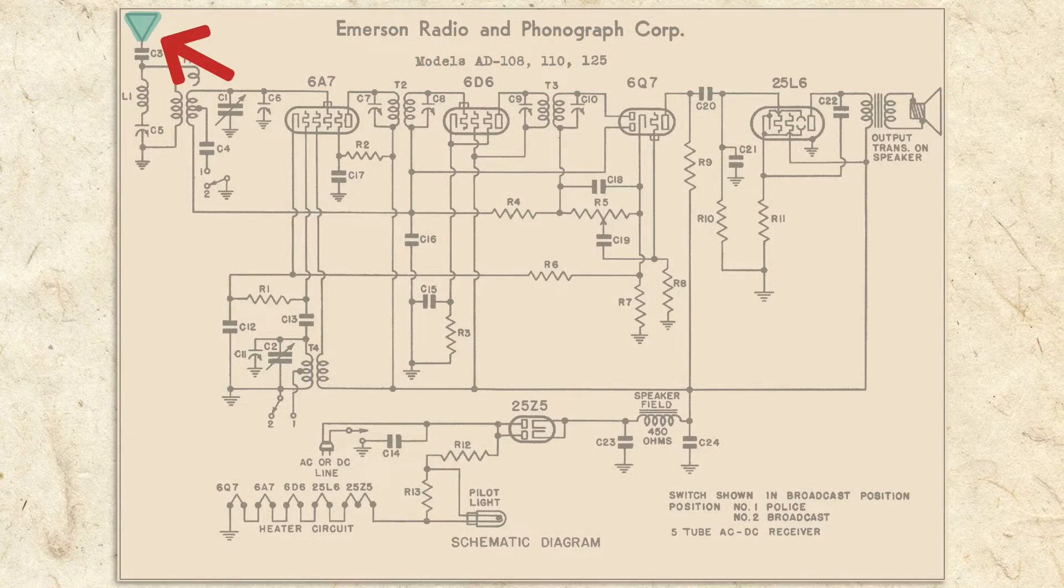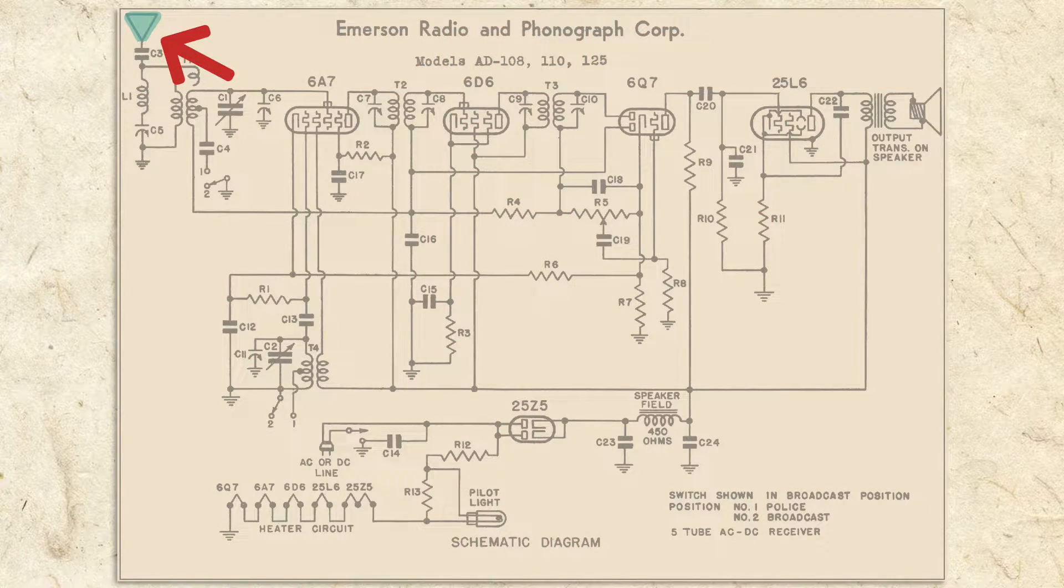As the signal enters the radio from the antenna, it first encounters capacitor C3. This is to protect the circuit in case the antenna wire touches an external DC current. After the capacitor, the signal goes through the wave trap circuit.